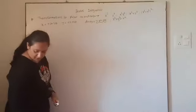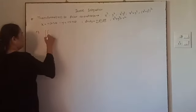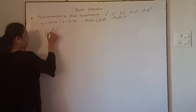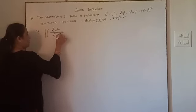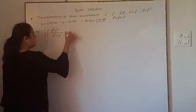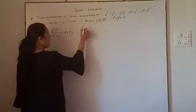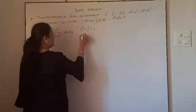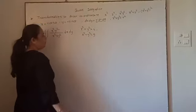Now we will take one example based on this. Let us evaluate the double integral of x²y²/(x²+y²) dx dy over the region bounded by x²+y² = 4 and x²+y² = 9.